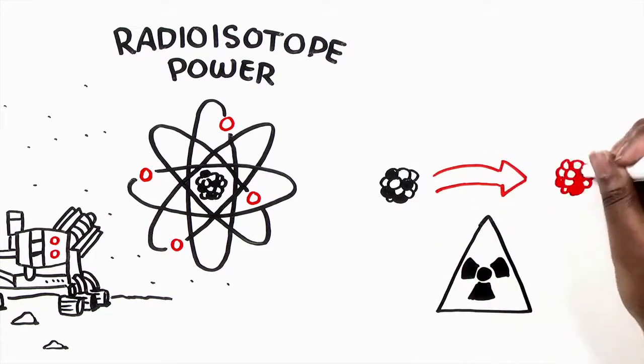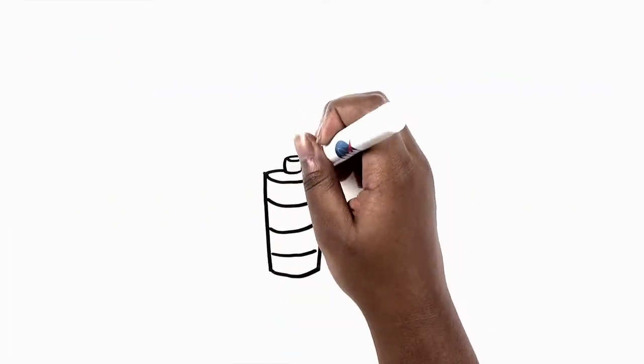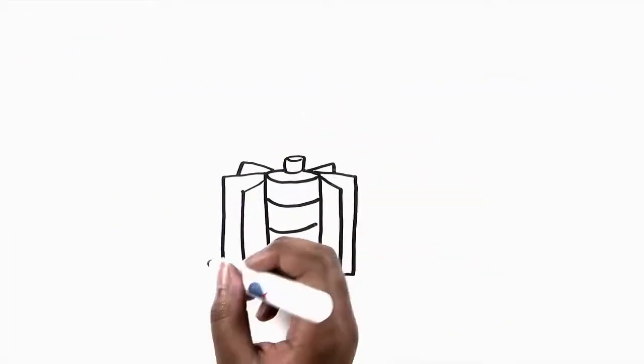A radioactive substance releases heat as it breaks down or decays. A system that converts that heat into electricity is called a radioisotope power system.